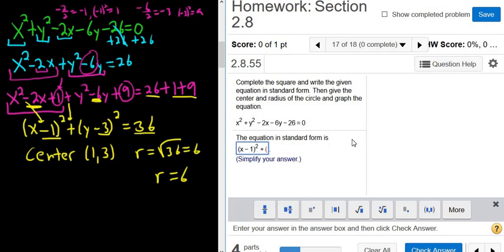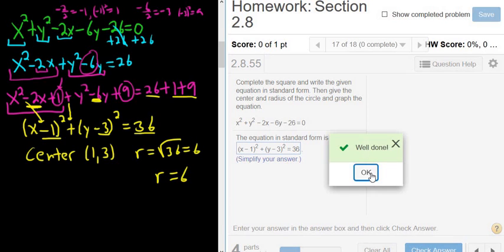Parentheses, y minus 3, parentheses, and then 2, equals 36. That should be okay. Let's hit check answer. Got it right.